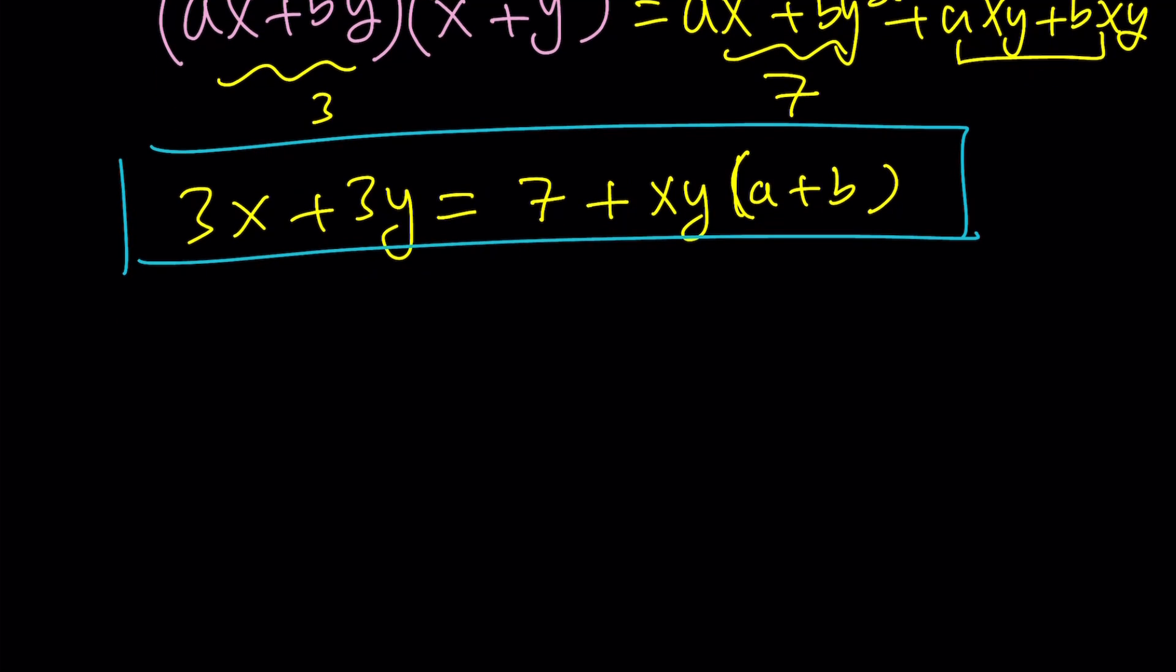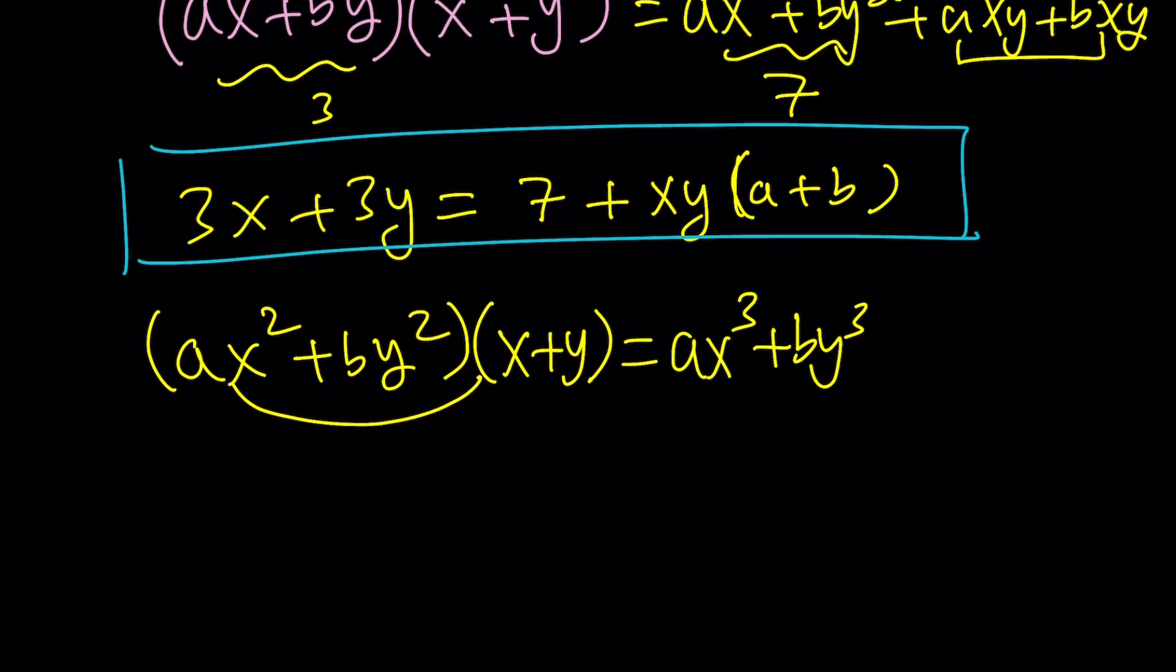Now, here's what we're going to do. We're going to repeat this process. This time, we're going to multiply the second equation, which is ax squared plus by squared, by x plus y. And this gives us ax cubed plus by cubed. By the way, I'm multiplying these first, and then the other ones next. And then we're going to get ax squared y plus bxy squared.